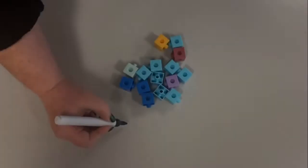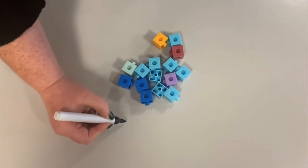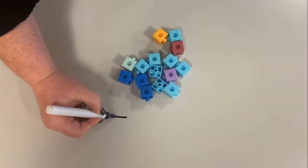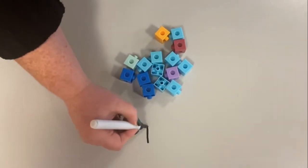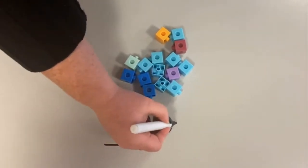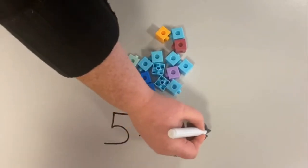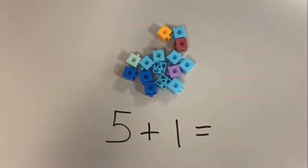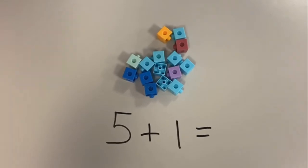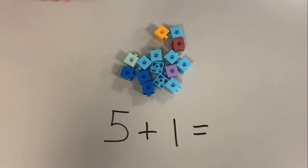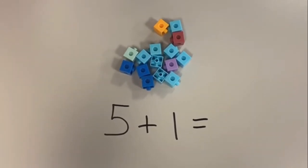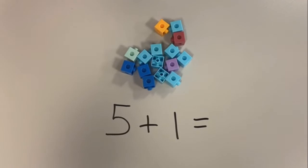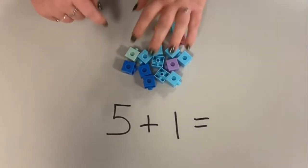To start off with we're going to be adding one more. So the calculation we're going to do is five plus one equals. Now using these cubes, or anything that you've got in your house — it could be pieces of pasta, it could be pieces of ripped up paper — we're going to work this out.